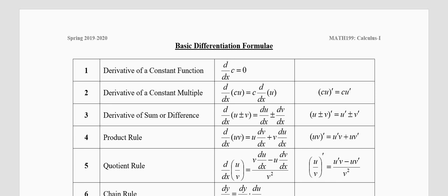Let me recall — the limit definition we will not discuss today; we discussed it all of last week and saw examples including sine and cosine. Today we shall look at some basic functions. Look at formula number one: the derivative of a constant function — the derivative of a number is zero.